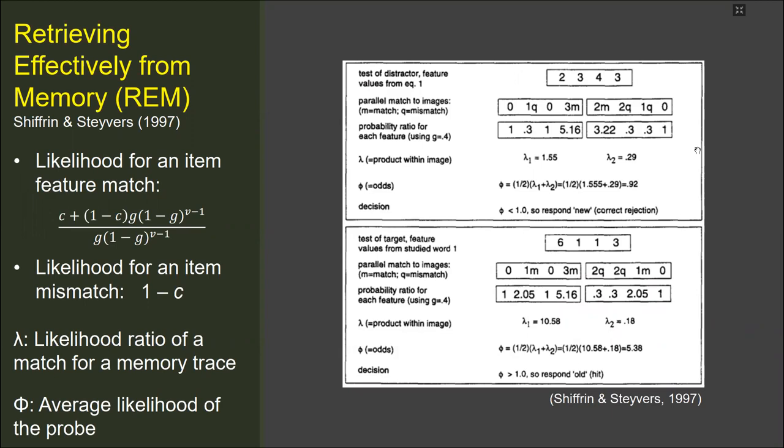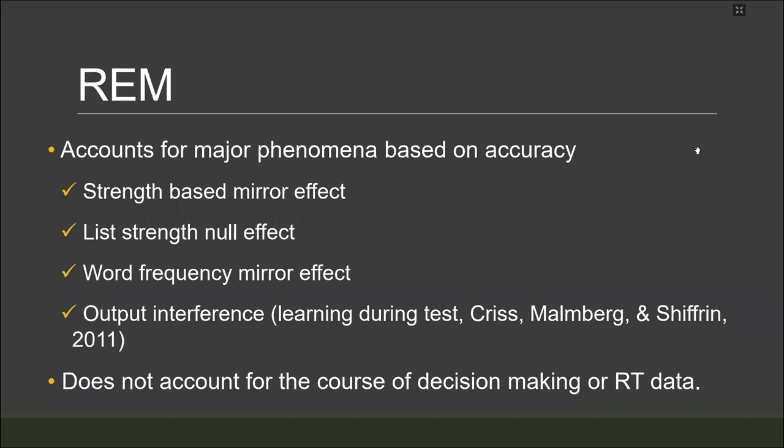The likelihood ratio of a match is calculated for each memory trace by the comparison between the features of the probe and the memory trace. The average of the likelihood ratios of the memory traces gives the odds ratio of the probe. The odds ratio is compared to the decision criterion, and the decision is made. With these mechanisms, REM model explains some major findings in the recognition literature based on accuracy scores. However, it doesn't explain the course of decision making and does not predict response times for the recognition test.